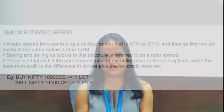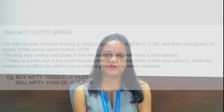Similarly, there is one more strategy we can use instead of the bear put or bull call spread — that is ratio spreads. This can be done in calls and puts both; it is just one step further. We buy one ATM and then sell two lots of the next OTM. So if we are buying the 10,900 call option, then we are selling two lots of the 11,000 or 11,100 strike. This is the strategy we use when we are sure of the rally on the upside or downside but not the full extent of the move.